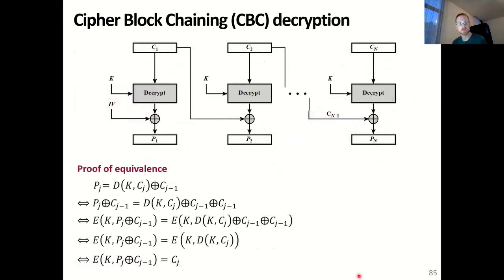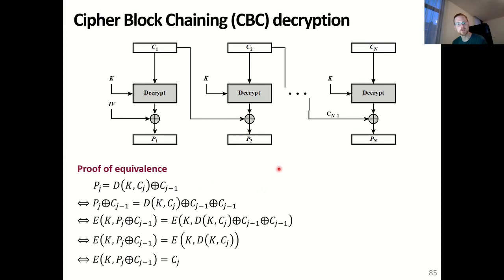Here you see the decryption of cipher block chaining mode, which works exactly in the inverse order. You take your first ciphertext block, which is then decrypted, and by combining it with the IV using XOR, you again obtain the original plaintext block P1. C1 is also used after decrypting C2 to obtain P2. This works because the XOR operation is invertible and is the inverse of itself. At the bottom you see the proof of equivalence of the encryption and decryption algorithms for cipher block chaining — I leave it as an exercise for you to validate this proof.